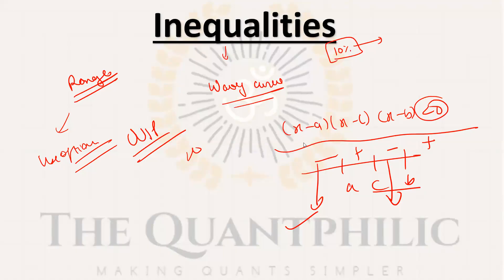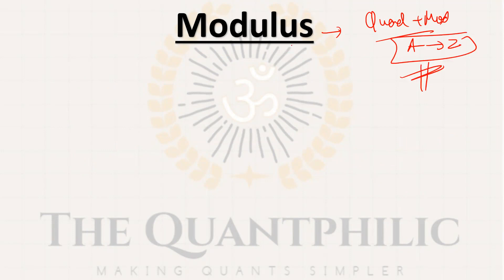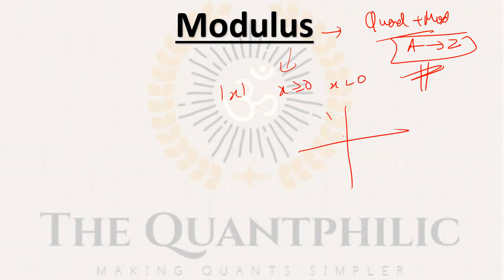Now we come to modulus — also an important topic. About 10 percent of questions can be expected from this. Quadratic and modulus are the two topics I would suggest doing A to Z, because questions will definitely come. For modulus basics, you should know that |x| means x ≥ 0, and understand the V-shaped graph.